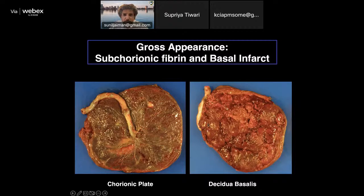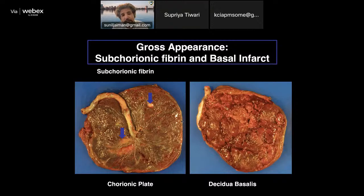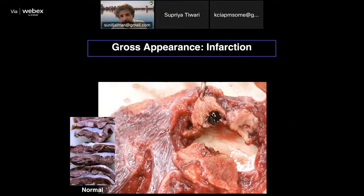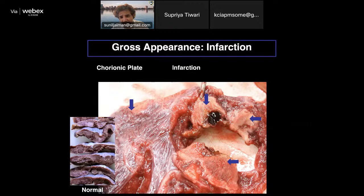Here you see subchorionic fibrin plaque and basal infarction. Subchorionic fibrin plaque in small amounts is not pathological — it can be seen in term placentas. It becomes pathological only with substantial subchorionic hemorrhage. Basal infarct is pathological; this is the gross appearance of infarction. On the left side you see a normal cut section showing the spongy parenchyma, the chorionic plate, and then the infarcted area with a washed-out appearance containing a central hematoma.